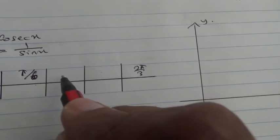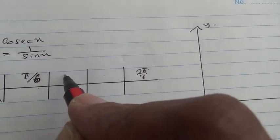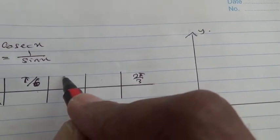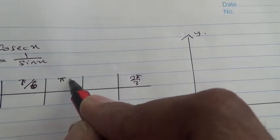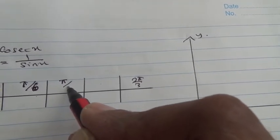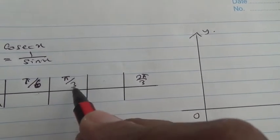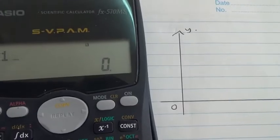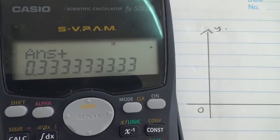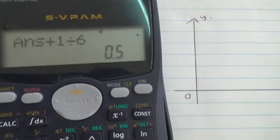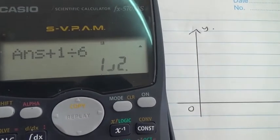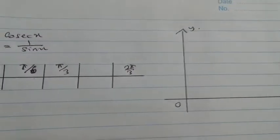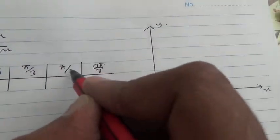So pi upon 6 plus pi upon 6 would be pi upon 3, because that's two pi upon 6. Pi upon 3 plus pi upon 6, you're taking one-third and adding with one-sixth, and therefore you get half. So that's going to be pi upon 2, so this will be pi upon 2.